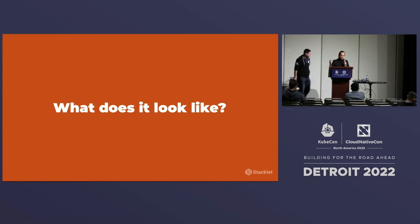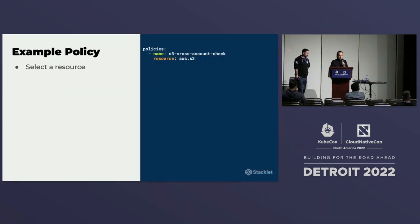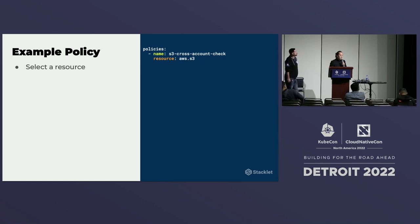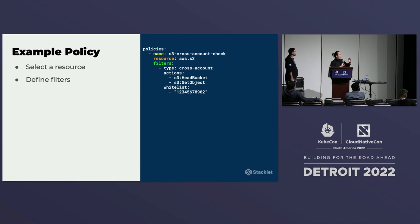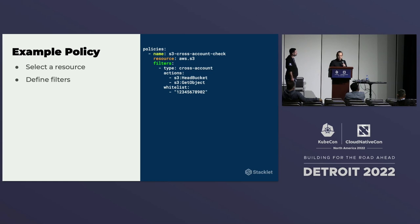I'll give you a look at what a Custodian policy looks like. It starts out very simple — you just specify a name and a resource type. In this case, we're looking at S3. Then you define your filters. With Custodian, there are a lot of built-in filters that allow you to look at relationships between objects or between different resource types. Here we're looking at the actual policy on the S3 bucket itself, saying we're going to allow access from this account to do certain actions cross-account.